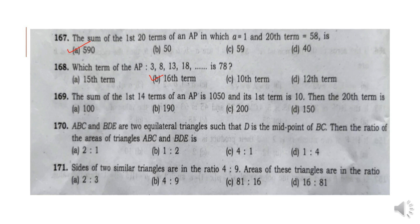Question 169: The sum of the first 14 terms of an AP is 1050 and its first term is 10. Then the 28th term is Option C: 200.